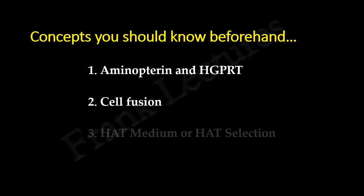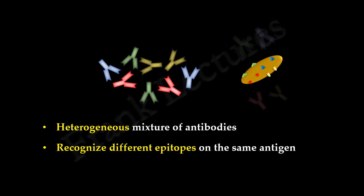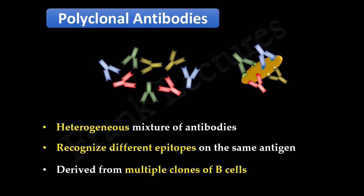Before starting today's video lecture, I hope you have gone through the previous three video lectures, and now you are all familiar with the following concepts. Till now we have studied that in response to an antigen, our immune system produces a heterogeneous mixture of antibodies. These antibodies are of different specificities — they recognize different epitopes on the same antigen. The antibodies derived from multiple clonal B cells are known as polyclonal antibodies. We also understood that polyclonal antibodies have some limitations in diagnostic and therapeutic applications.